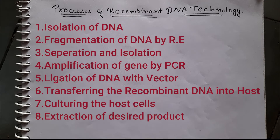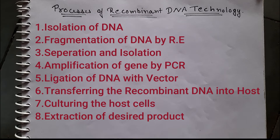The steps involved in the process of recombinant DNA technology are: first, isolation of DNA; second, fragmentation of DNA by restriction enzyme; third, separation and isolation of a desired DNA fragment; fourth, amplification of gene of interest using PCR; fifth, ligation of the DNA fragment into a vector; sixth, transferring the recombinant DNA into the host; seventh, culturing the host cells in a nutrient medium at large scale; and eighth, extraction of the desired product. These eight steps form the process of recombinant DNA technology.